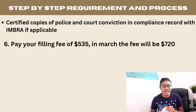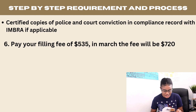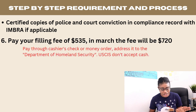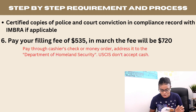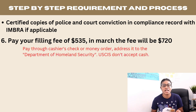The next step is to pay your filing fee. Currently the filing fee is $535, but note that it is going to change to $720, so be aware of that. Payment must be made by money order, personal check, or cashier's check. USCIS does not accept cash under any circumstances. Make the check payable to the U.S. Department of Homeland Security.